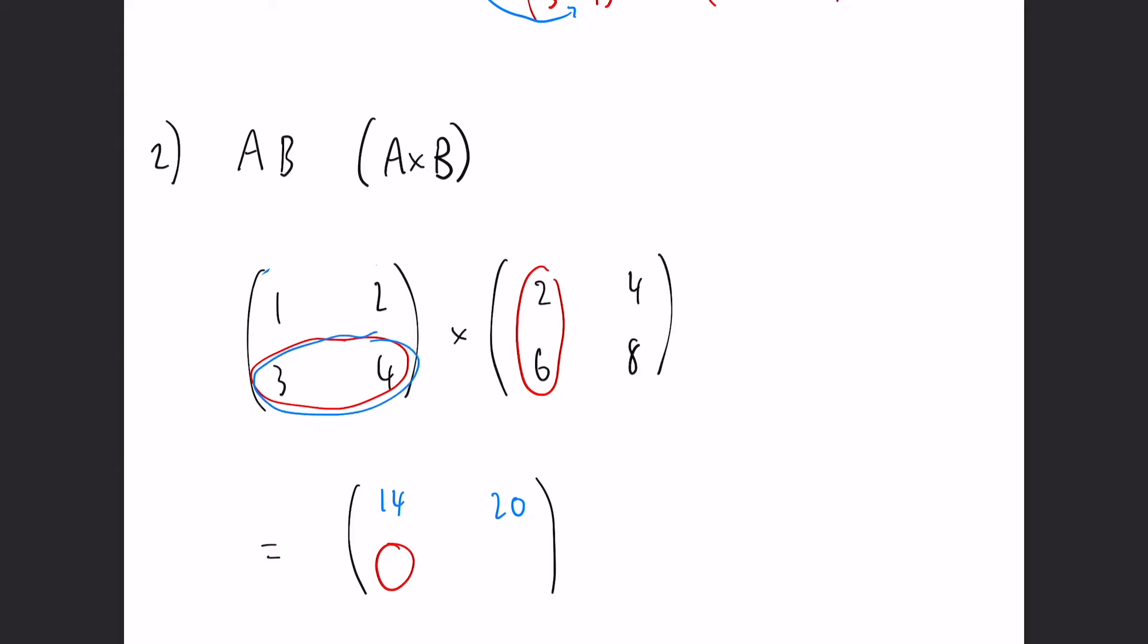For our bottom right, we do the bottom row and the second column. We have 3 times 2 which is 6, and 4 times 6 which is 24, leaving us with 30. Then for the final position, 3 times 4 is 12 and 4 times 8 is 32, leaving us with 44 as our answer.